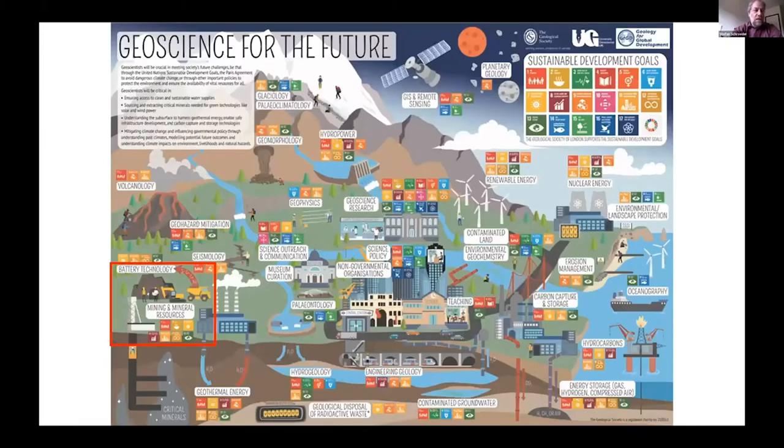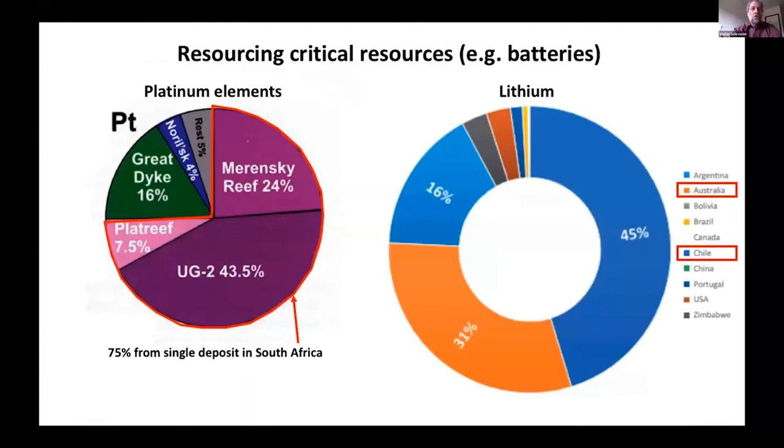The second example I wanted to talk about really briefly is about critical resources, and that is important for battery technologies, for example. So critical resources are of growing economic importance, and two examples here are platinum and lithium. These are important, for example, for batteries, and such are important raw materials for transition into a low carbon economy.